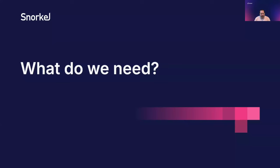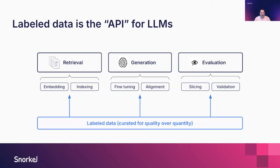What do we need to get started optimizing a RAG pipeline? It's labeled data — arguably the API for LLMs. Whether we're looking at optimizing retrieval, generation, or performing an evaluation, these things are broken down into different tasks: fine-tuning a model, evaluating responses, fine-tuning indexing. We need labeled data and, more specifically, high-quality curated data. This is a quality over quantity scenario — not necessarily 100,000 data points, but maybe as few as 1,000 really great data points can be highly effective.